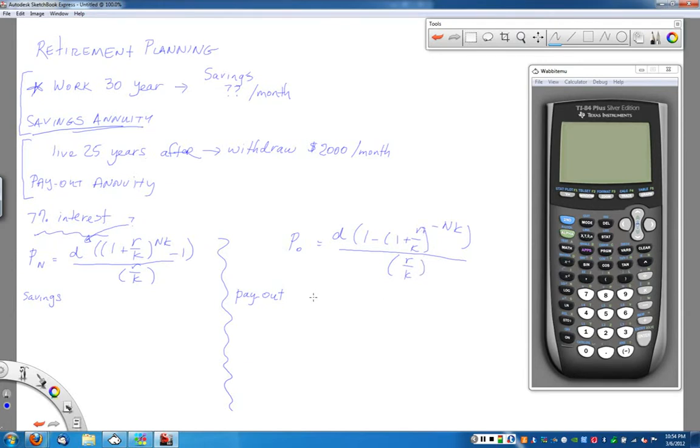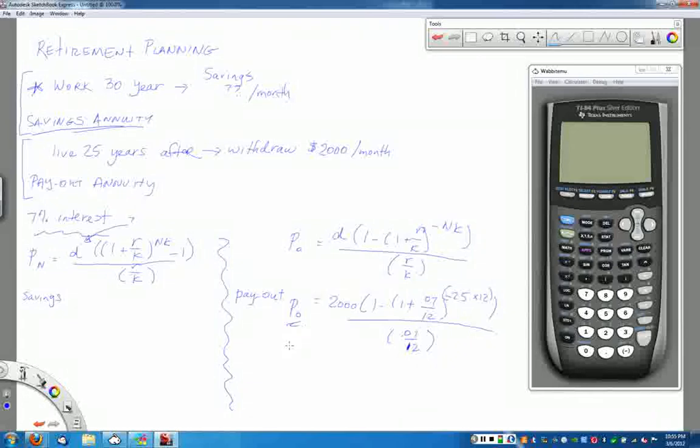In terms of the payout annuity, I know that I would like to withdraw $2,000 a month, so that's my value for D. I know that my account is earning 7% interest compounded monthly. Remember to take that to a negative power. I expect to live 25 years, so I have 25 times K which is 12 in the exponent. When I do all of this, I'm going to figure out how much money I had to start with.